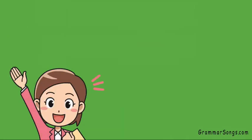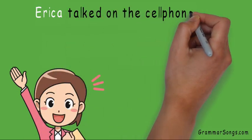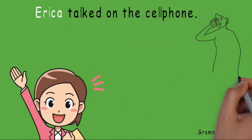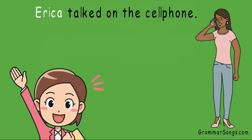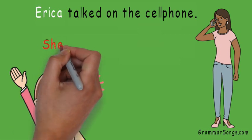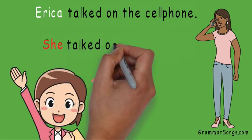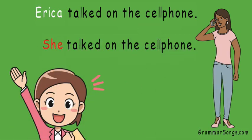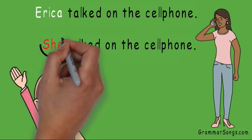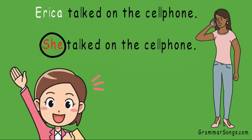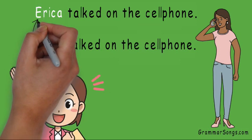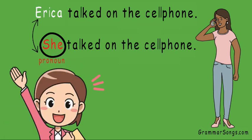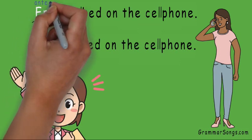So if I use the proper noun Erika and write 'Erika talked on the cell phone,' I could use the pronoun 'she' and write 'she talked on the cell phone,' since Erika is one person and a female. 'She' is my pronoun referring to Erika, so Erika is the antecedent.